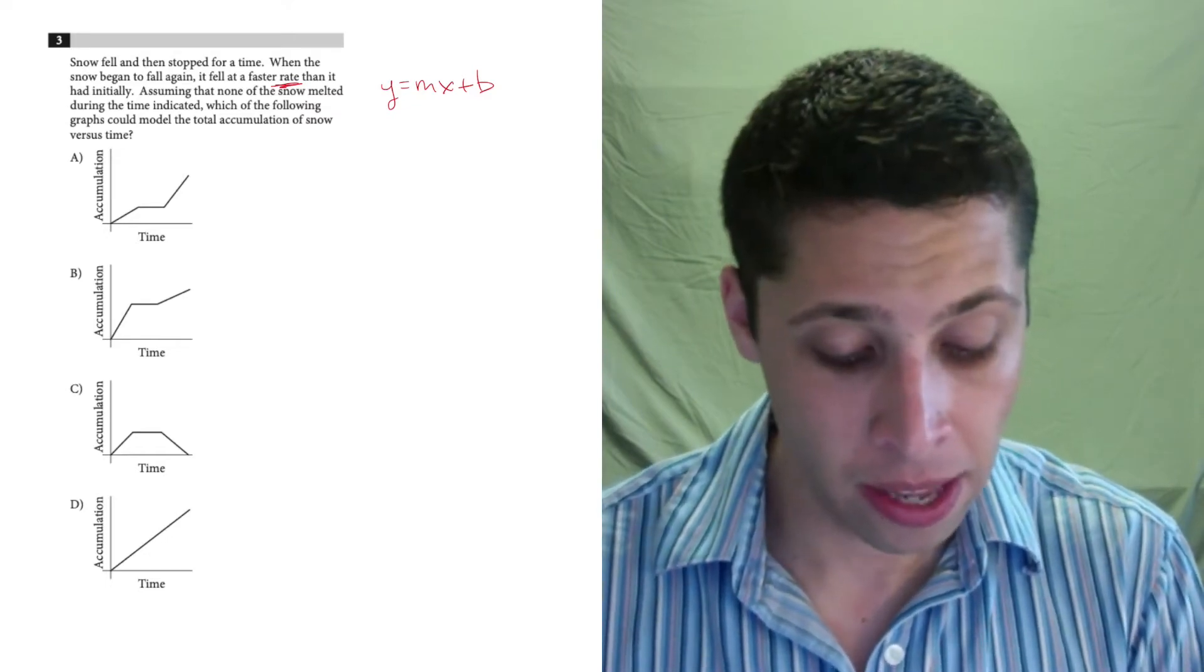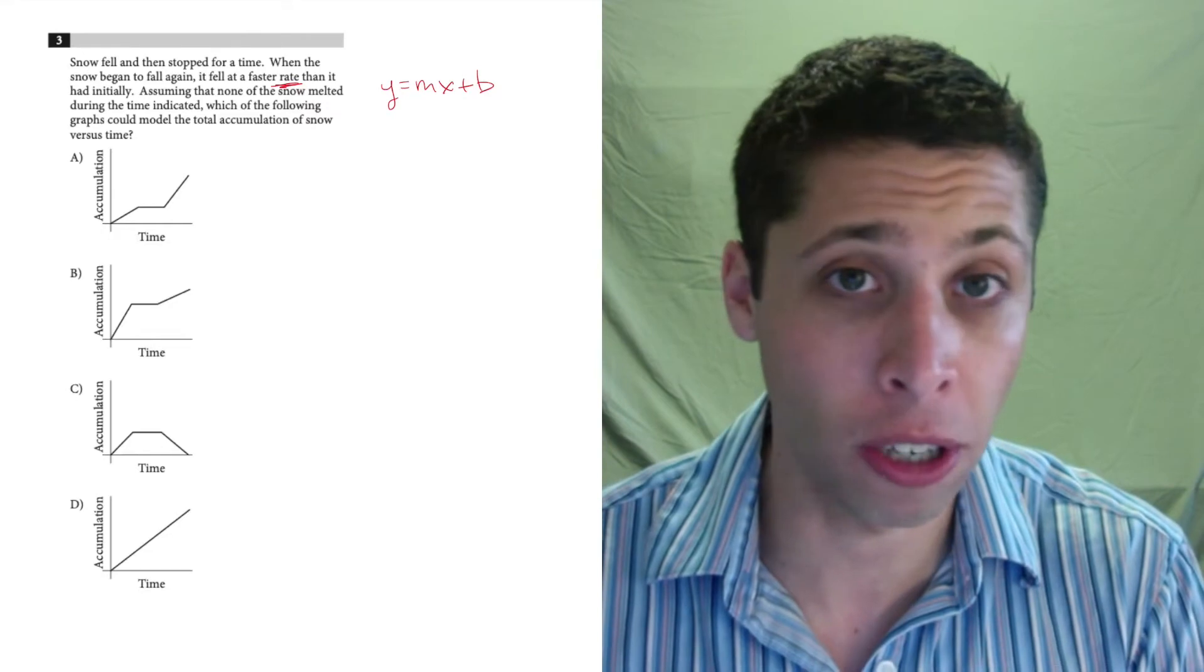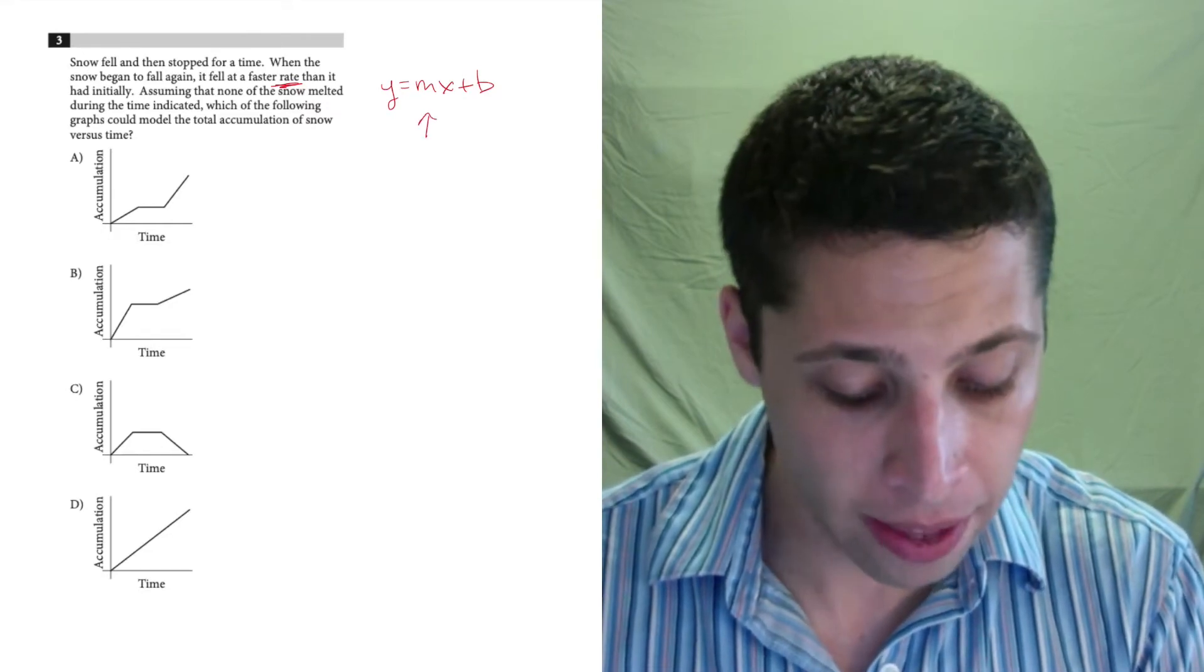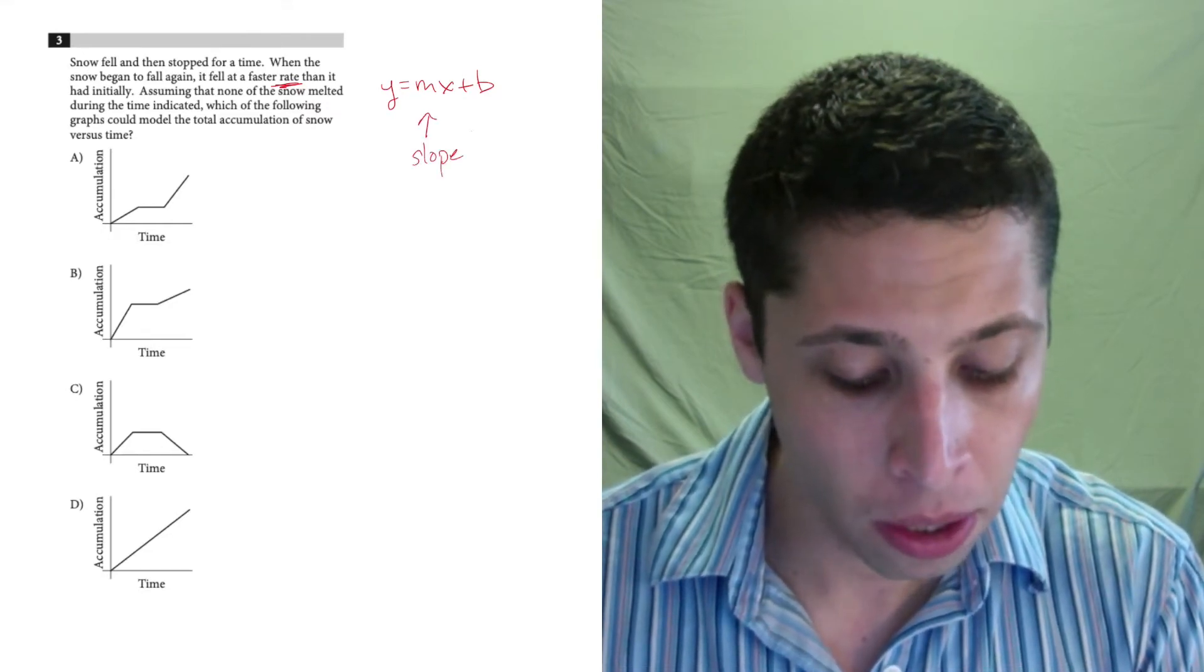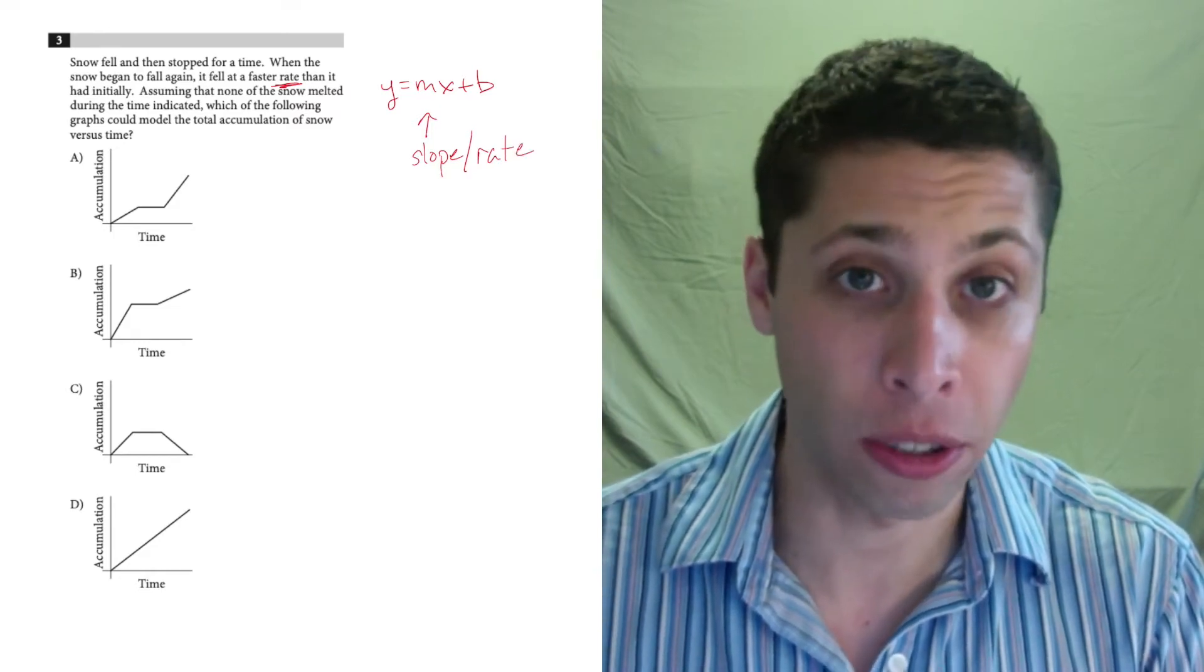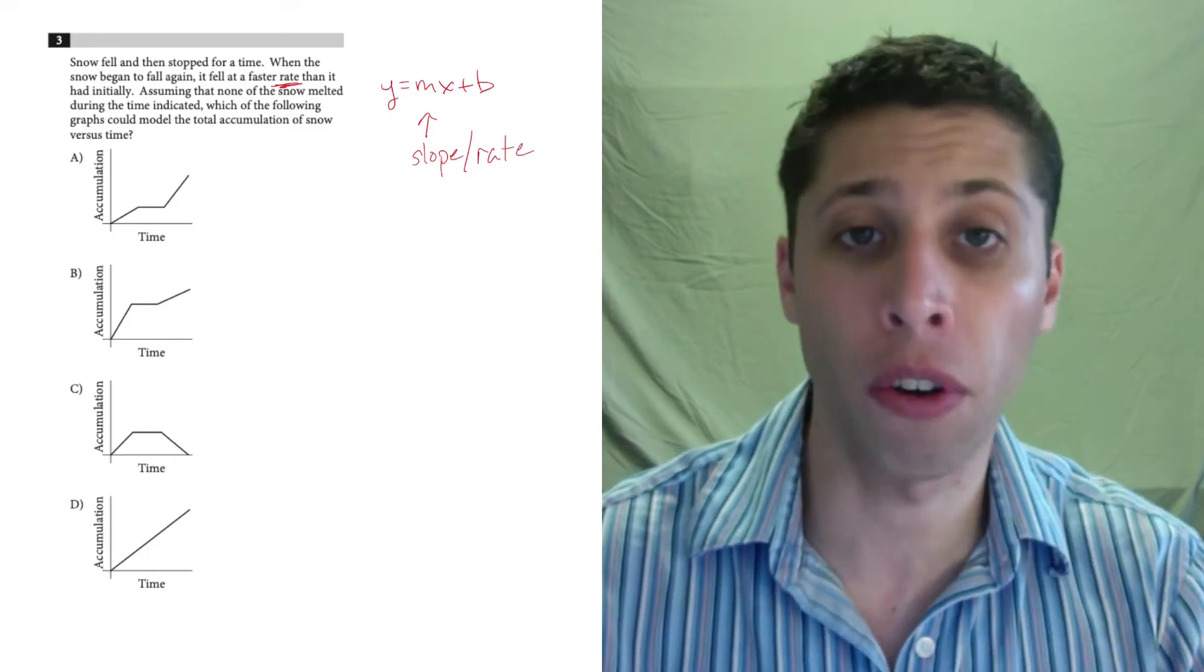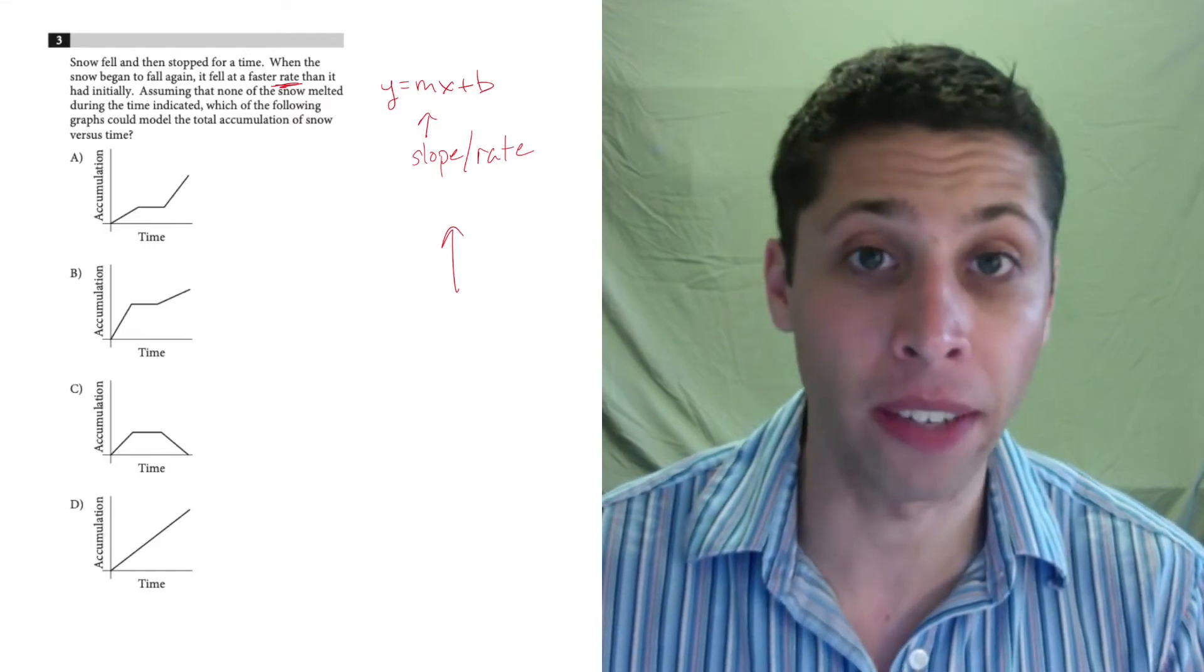Lines have two pieces. They have a B, which is kind of like a starting point, a y-intercept. And then they have a slope, which represents the rate of increase or decrease. So here they're talking about snow falling, so it's only going to be a rate of increase.